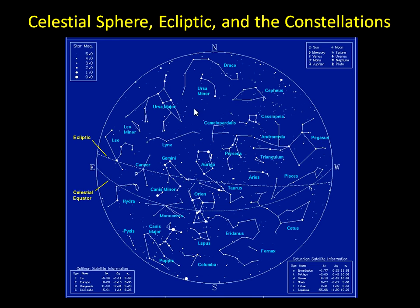When you go outside at night, here's a star chart that you might use if you go out stargazing on a particular night. This allows you to identify some of the features in the night sky, and you can take these stars that are up on that night and break them into patterns which we call constellations.